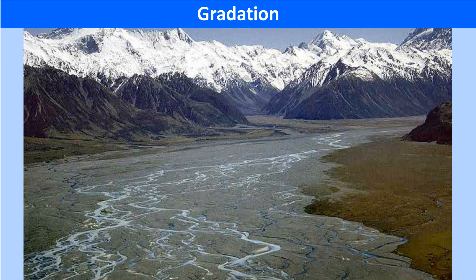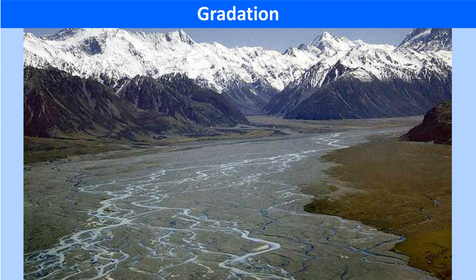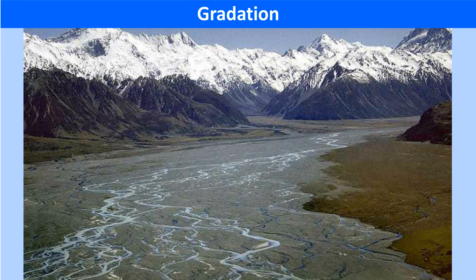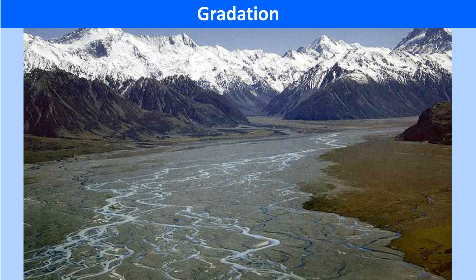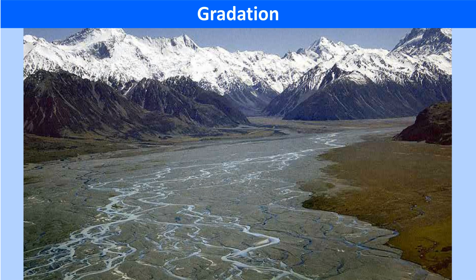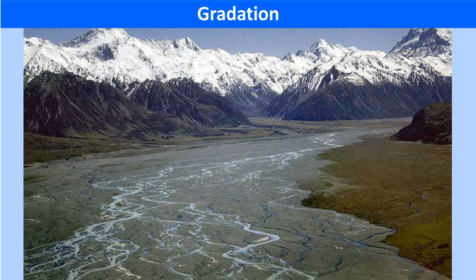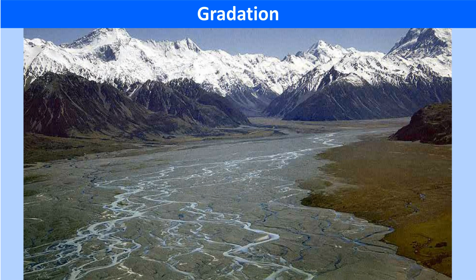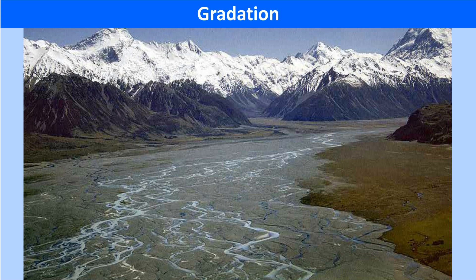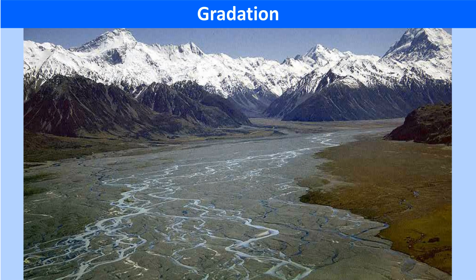Gradation can be defined as the leveling of the earth's surface through natural processes which cause it to increase or decrease. Weathering, running water, moving ice, winds, groundwater and sea waves are the various agents of gradation. They tend to level the land surface to a common grade by increasing or decreasing it.